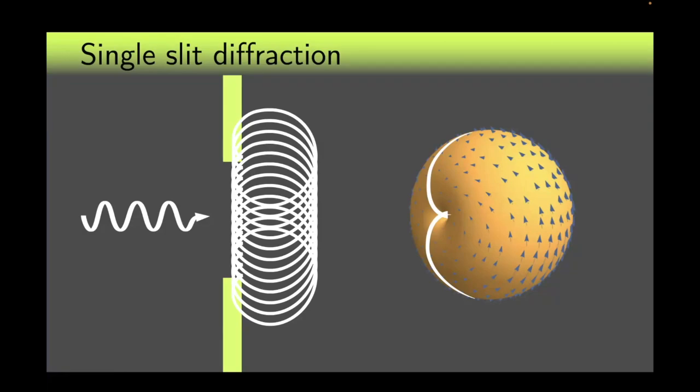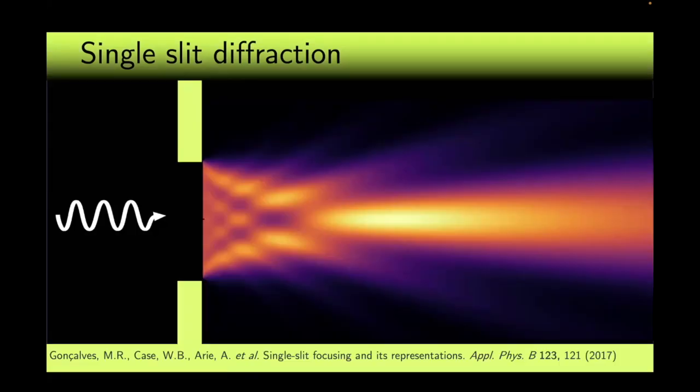However, we will disregard this later and assume that the radiation patterns are just spheres, since we will be considering small angles. According to the Huygens-Fresnel principle, every point in the plane of the slit will emit such a wave. The resulting wave after passing through such a slit will be a result of the interference of all the secondary waves.